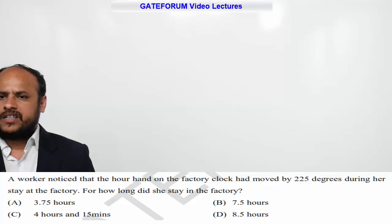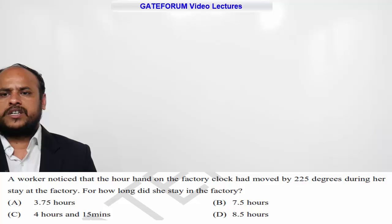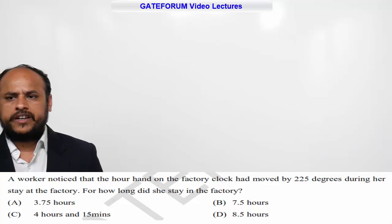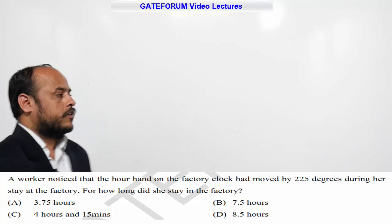Option A is given 3.75 hours, option B is given 7.5 hours, option C is given 4 hours and 15 minutes, option D is given 8.5 hours.